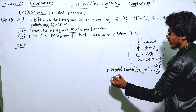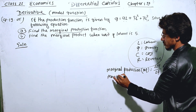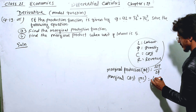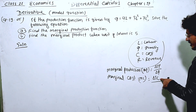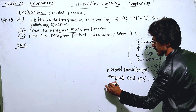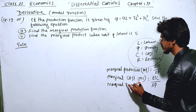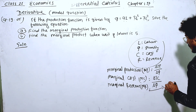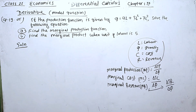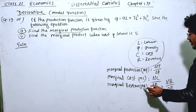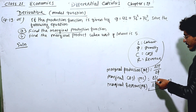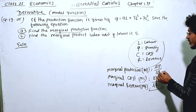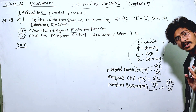We have marginal cost, or MC, which is delta TC — change in total cost divided by change in quantity. We also have marginal revenue, which is delta TR — total revenue divided by change in quantity. And marginal production is total production divided by quantity.